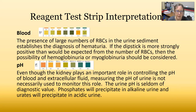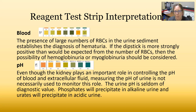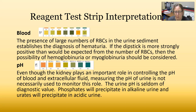For blood: the presence of large numbers of red cells in the urine sediment establishes the diagnosis of hematuria. If the dipstick is more strongly positive than would be expected from the number of red cells, there is the possibility of hemoglobinuria or myoglobinuria — meaning hemoglobin or myoglobin is being spilled into the urine versus intact red cells. Either finding needs to be reported, as both can be indicative of pathology.